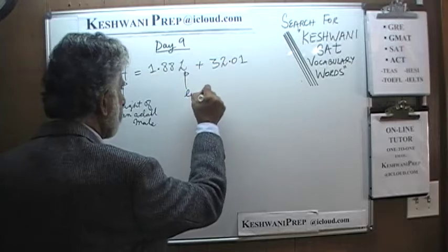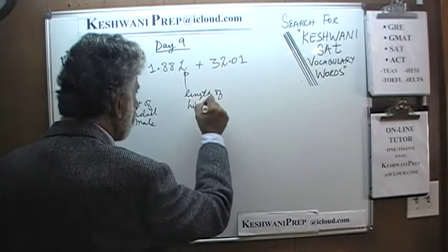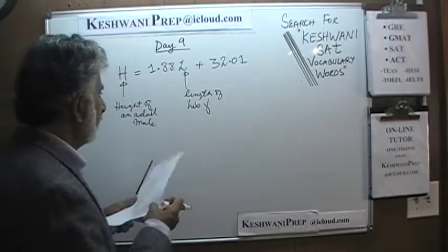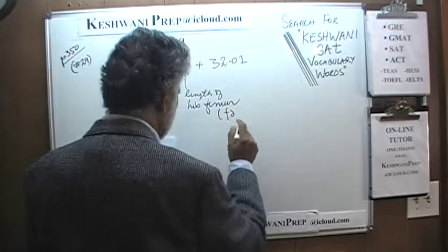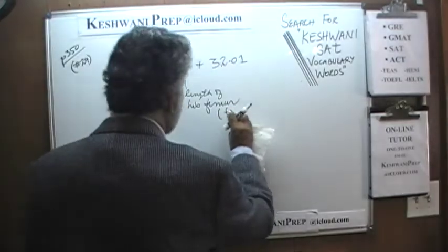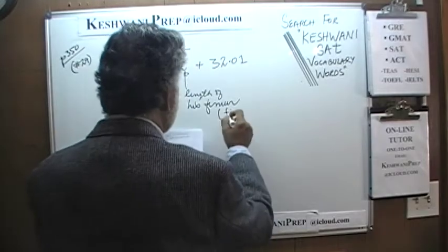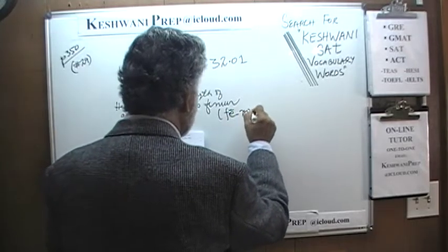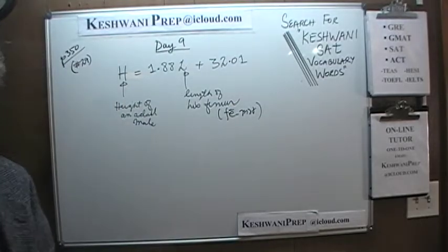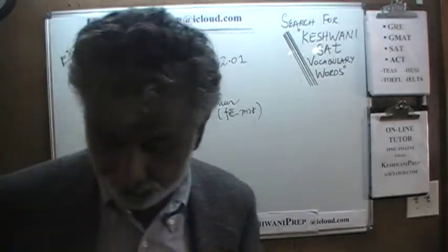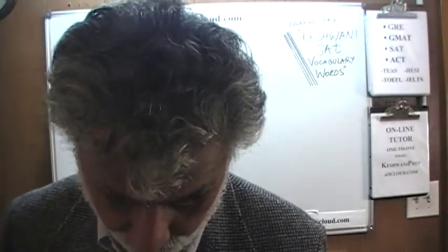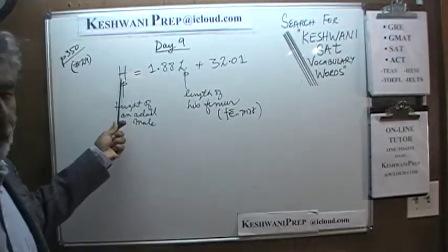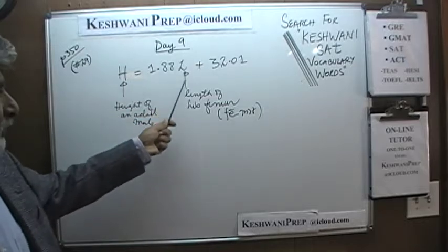Let me make sure I spelled that correctly — it is pronounced femur, not 'fur.' If L represents the length of his femur: I looked it up in the dictionary and apparently it is some kind of a bone that vertebrates have. This equation tells us what the height of an adult male we can expect to be, based on the length of his femur.